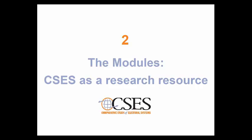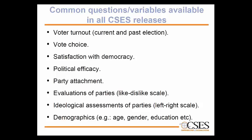Looking at the individual-level data in more detail: there are certain questions common to all CSES modules that can be used for longitudinal analysis. These include respondents' turnout in current and past elections, vote choice, satisfaction with democracy, sense of political efficacy, party attachment, evaluations of parties on a like-dislike scale, ratings of parties on a left-right scale, and demographics such as age, gender, and education. A comprehensive overview of all variables across all CSES modules is provided on the website.